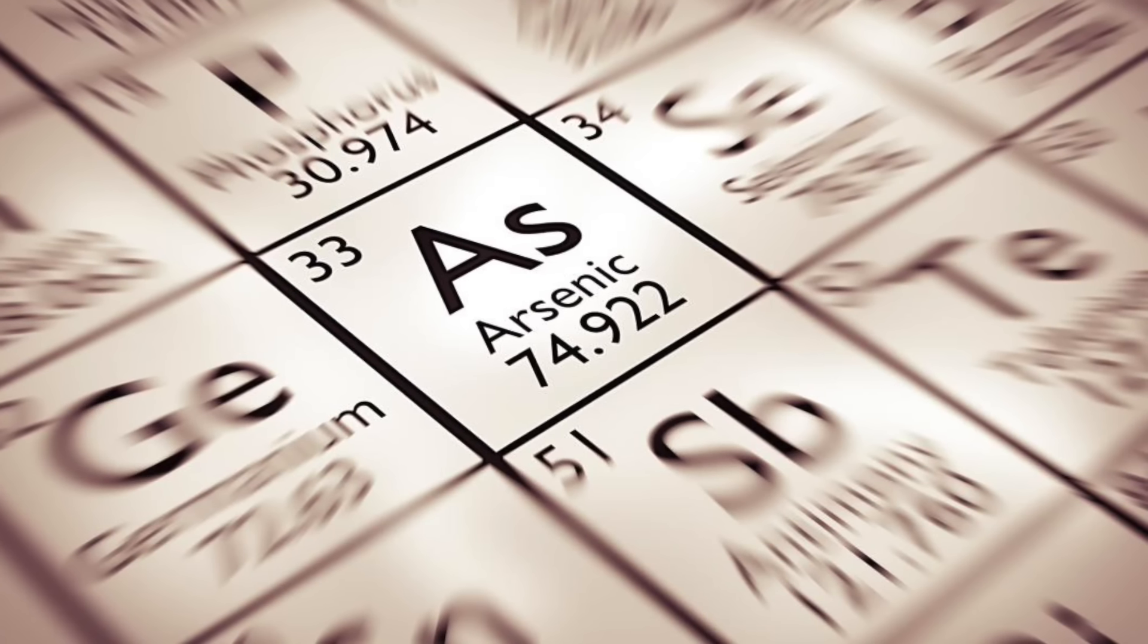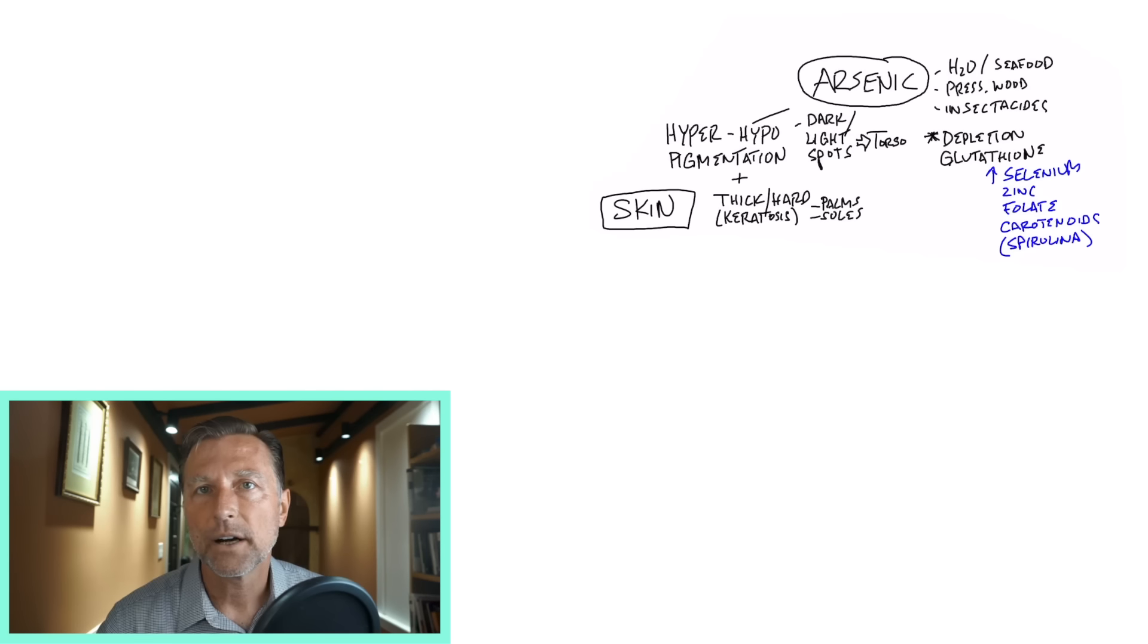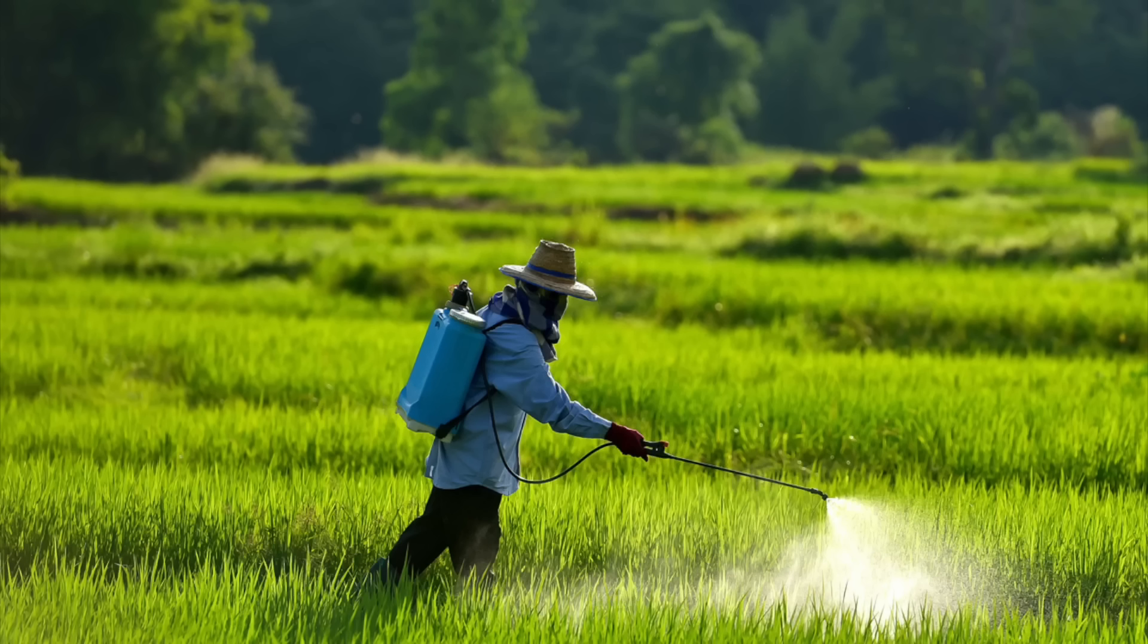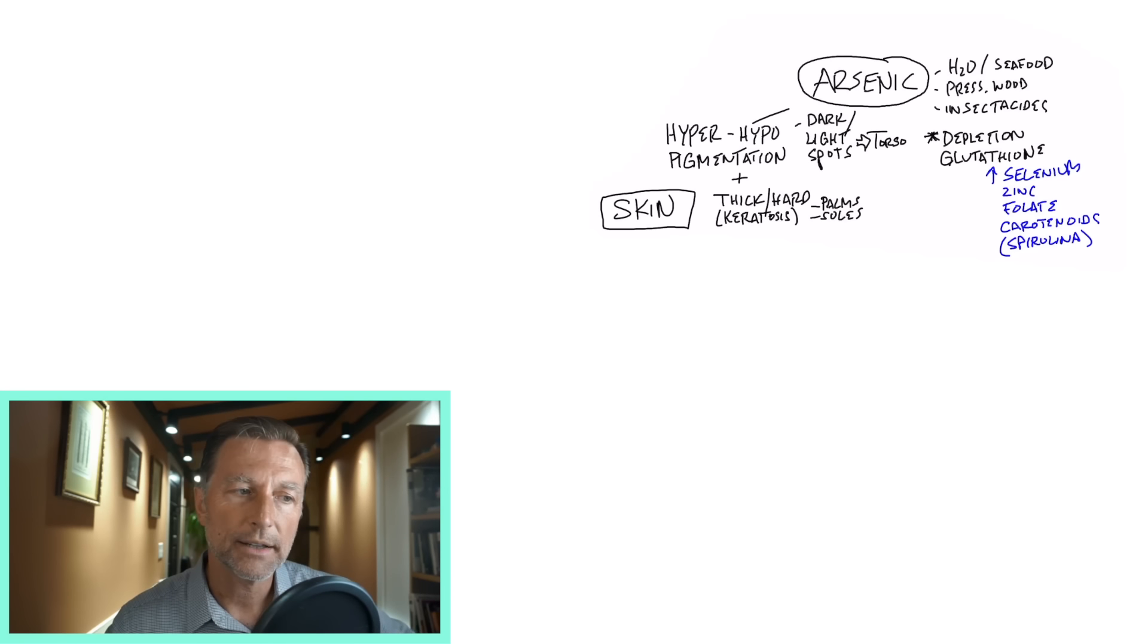But let's start with arsenic. You're normally going to find arsenic in pressurized wood, maybe in the water supply, maybe in an insecticide that ends up on your food. But too much arsenic can create either hyper or hypopigmentation, meaning your skin can start to look a little darker or lighter - little dark spots or little white spots, primarily on your torso, the mid part of your body.